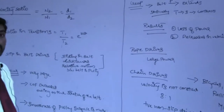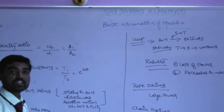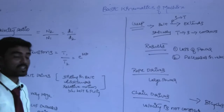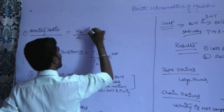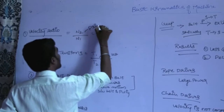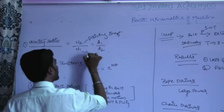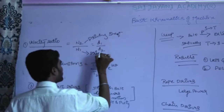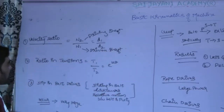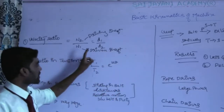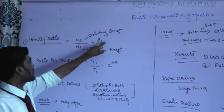The next concept is velocity ratio. Velocity ratio is defined as the ratio of the speed of the driving shaft to the speed of the driven shaft. It is written as N2 by N1 equals D1 by D2. This is the velocity ratio for belt drives.